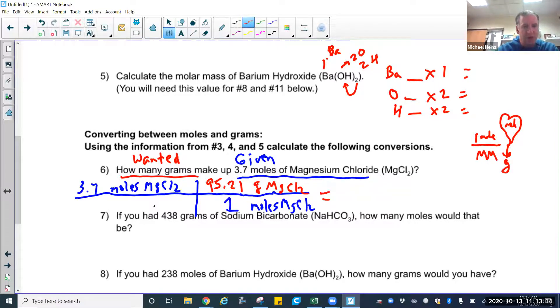And this one comes out to 3.7 times 95. So if it was one mole, it'd be 95.21 grams. But I don't have just one mole. I have 3.7 moles. So it's going to be almost four times whatever the molar mass is, which is 95, which comes out to 352.28 grams.